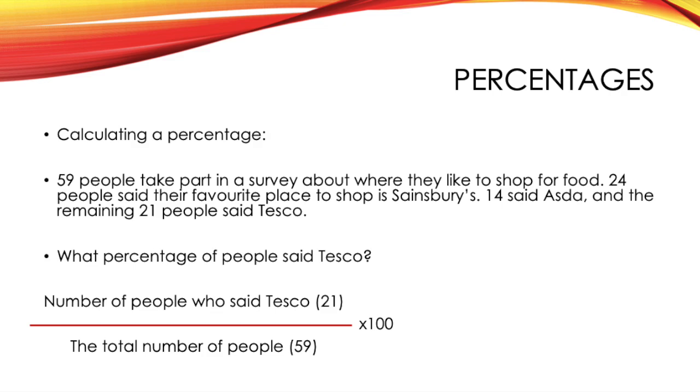So what we do to work this out is take the total number of people who said Tesco, which is 21, and divide that by the total number of people, which is 59. However, you may not always be given the total number of people. And to work this out, you simply just add up all of the numbers you have. So that would just be 24 add 14 add 21. You would then times your answer by 100 to change it into a percentage. And when doing this, you should get an answer of 35.59% of people having said Tesco's.